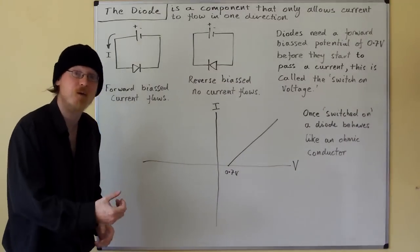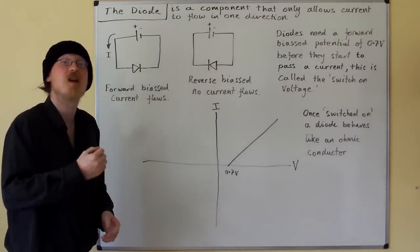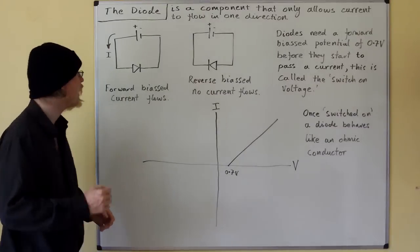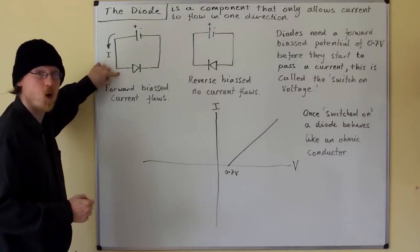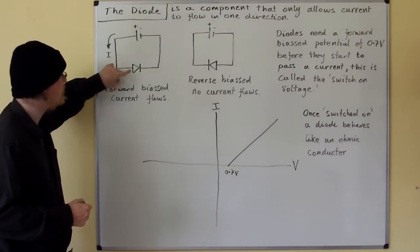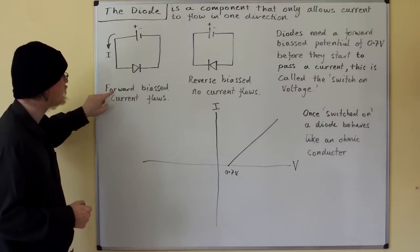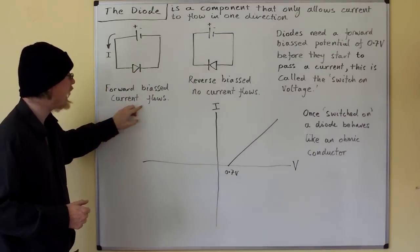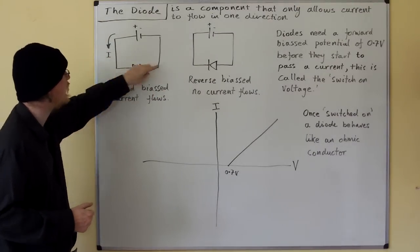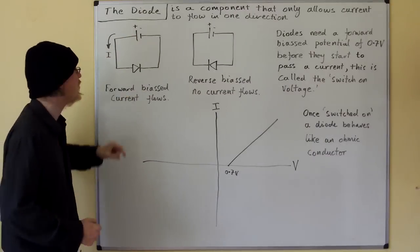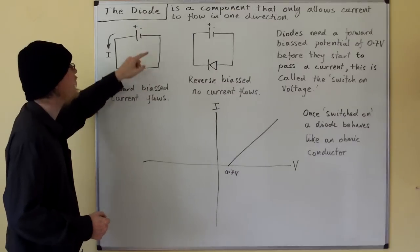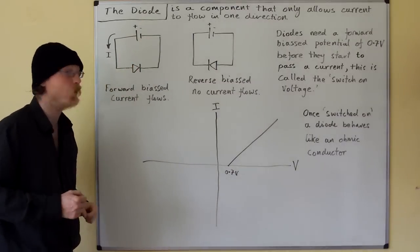So here we have a forward biased diode. This is the symbol for a diode, and it's forward biased, which means it allows current to flow around the circuit from positive to negative. That's conventional current flowing from positive to negative. The electrons, of course, flow the other way.